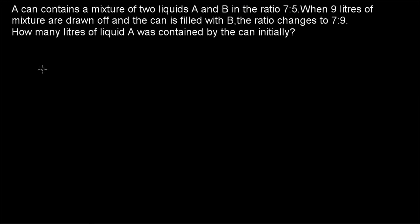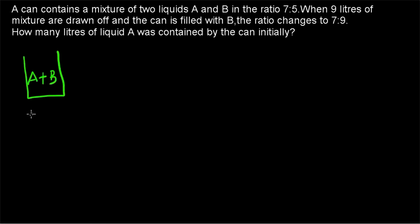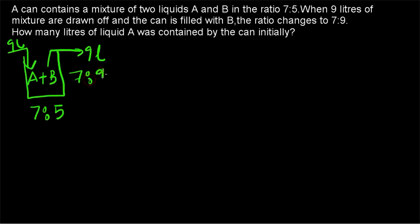Example number 2: a can contains a mixture of 2 liquids A and B in the ratio 7 is to 5. When 9 liters of mixture are drawn off and the can is filled with B, the ratio changes to 7 is to 9. How many liters of liquid A was contained by the can initially? The can has a mixture of A and B in ratio 7 is to 5. Then 9 liters is taken out and replaced with 9 liters of B, and the ratio changes to 7 is to 9.